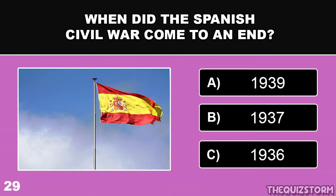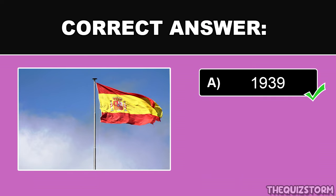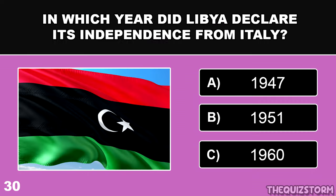When did the Spanish Civil War come to an end? And the correct answer is 1939.